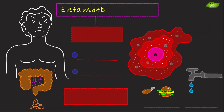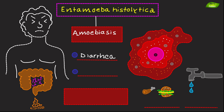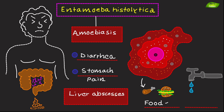Entamoeba histolytica is an amoeba that causes amoebiasis, leading to symptoms like diarrhea, stomach pain, and in severe cases, liver abscess. It spreads via contaminated food and water.